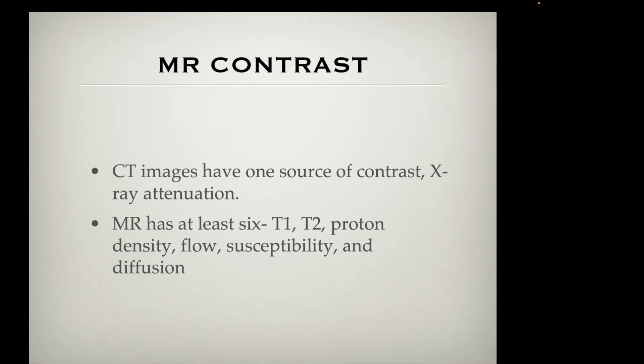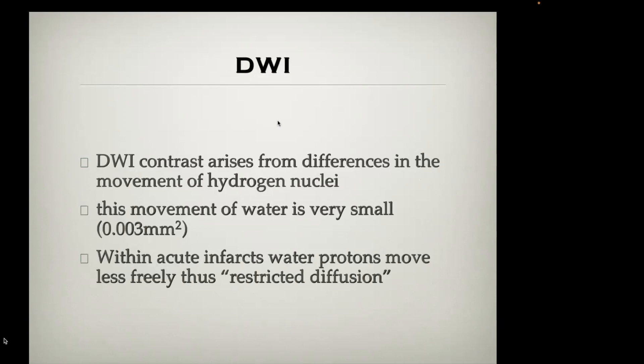Finally, tissue diffusion is what we'll talk about today. To go through all of these is really a separate course on MR physics. The contrast on diffusion-weighted imaging arises from differences in the movement of hydrogen nuclei. This movement of water is extremely small — so small that the movement of the brain and the individual would overwhelm it, which is why we require very fast imaging, usually echoplanar imaging, to minimize the confounding effects of patient and brain movement.